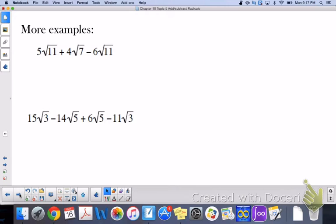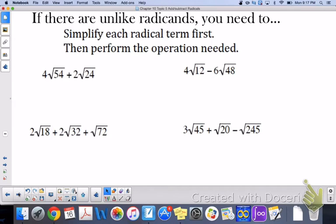Now, sometimes you might have to simplify. If they are unlike radicands, you need to simplify and then perform the operation. So with 54 and 24, 54 reduces down to 9 times 6. 9 is a perfect square that goes into it. Root 9 is 3. 4 times 3 is 12 root 6.